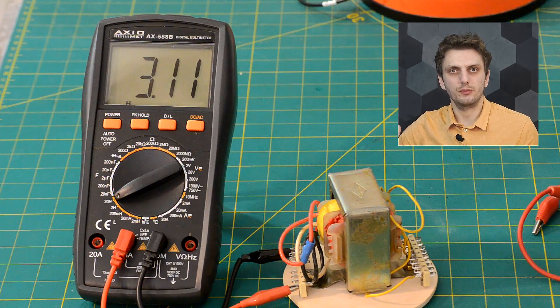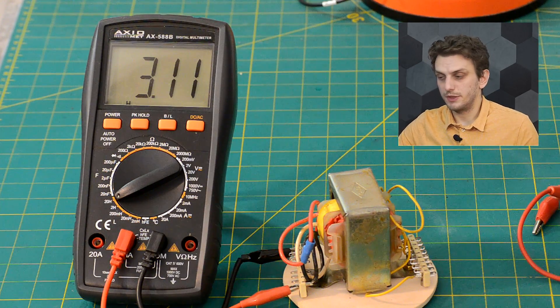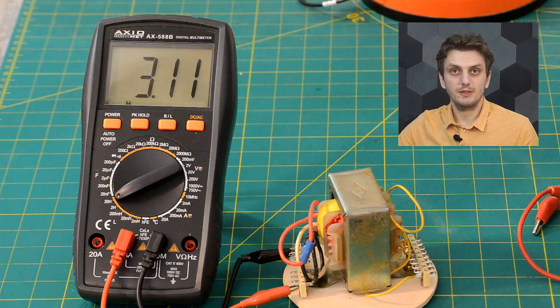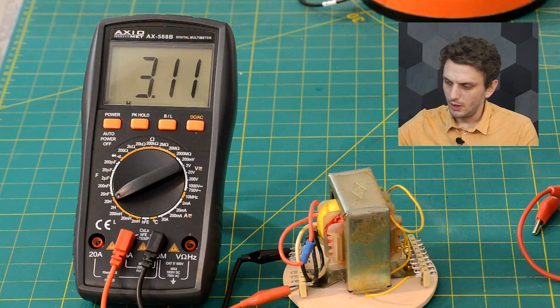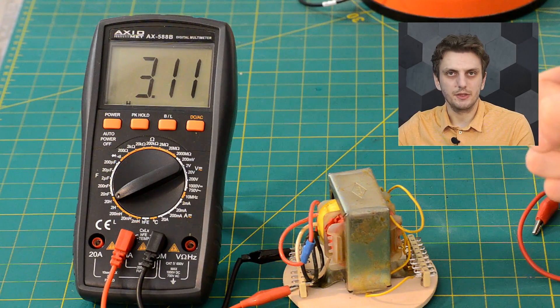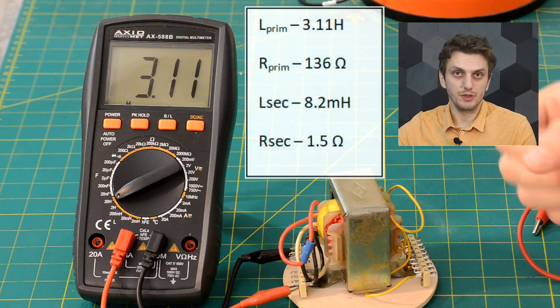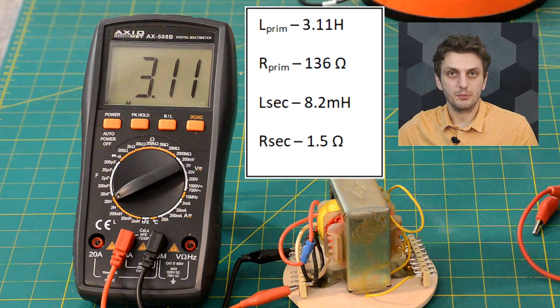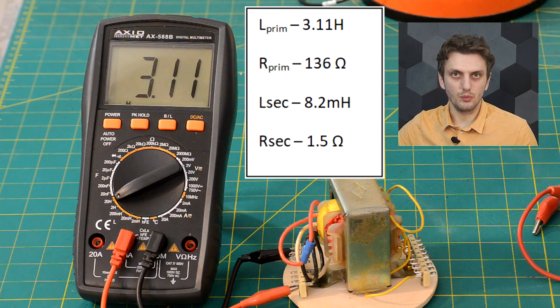Now apart from the coupling factor there's a bunch of other parameters involved in characterizing a transformer. So first of all let's look at how we could determine these parameters if we already have the transformer. And then let's see how we can implement them in the circuit simulator. Now since the transformer is basically made from inductors the first thing to characterize is the parameters of the inductors. So for that you can measure the primary and secondary side inductance using an inductance meter and you can also measure the primary and secondary side resistance using an ohmmeter.